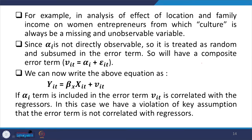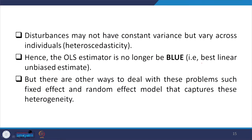Since alpha_i is subsumed in the error term, it is obviously correlated with the regressors. This constitutes a violation of the key assumption of the standard OLS or classical linear regression model — that the error term should not be correlated with the regressors. Disturbances may not have constant variance but may vary across individuals, which means committing the error called heteroscedasticity. Hence the OLS estimator is no longer BLUE — best linear unbiased estimator. There are other ways to deal with these problems, such as fixed effect and random effect models.